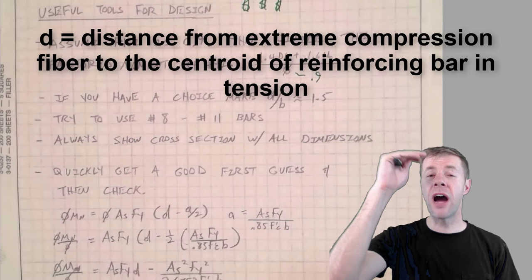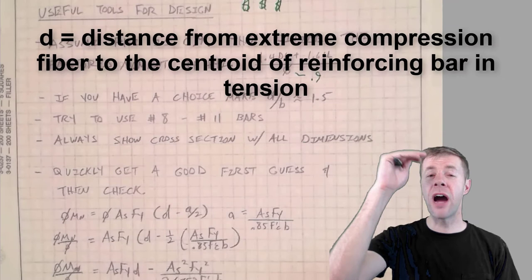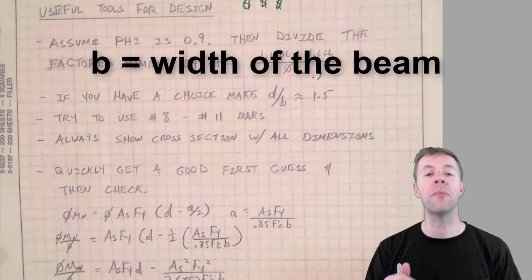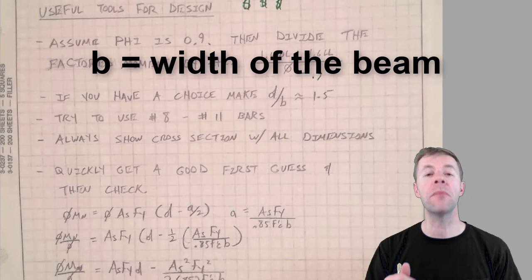And your B is your width of the beam. You should try to make your D over B ratio about 1.5, or your depth about 50% larger than the width of your beam.